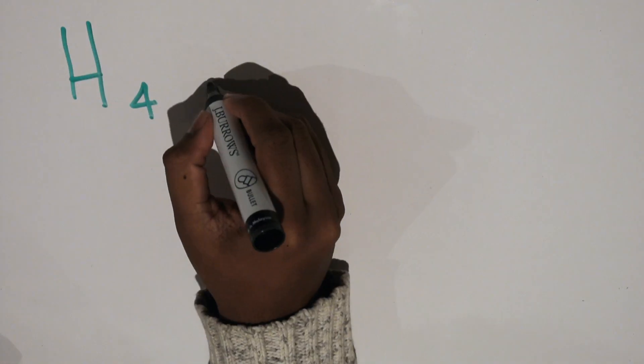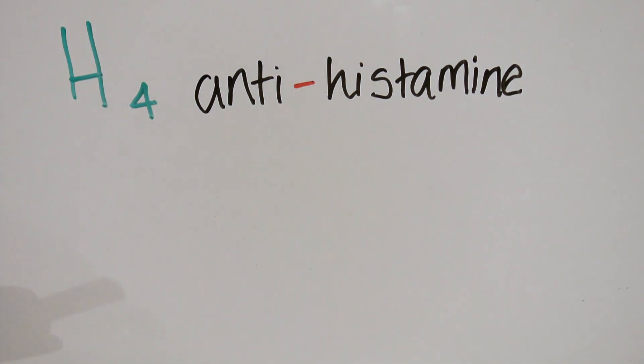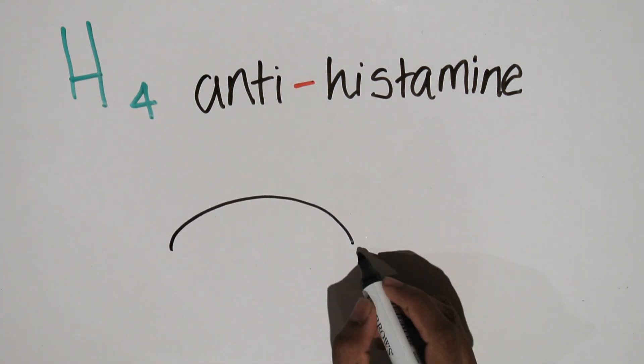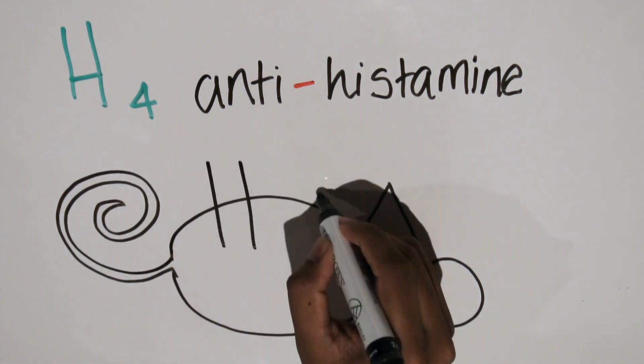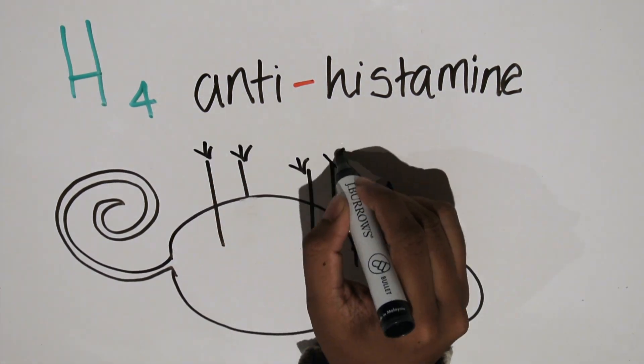Not much is known about H4 histamines except that they act on H4 receptors in bone marrow and white blood cells according to experiments on mice.